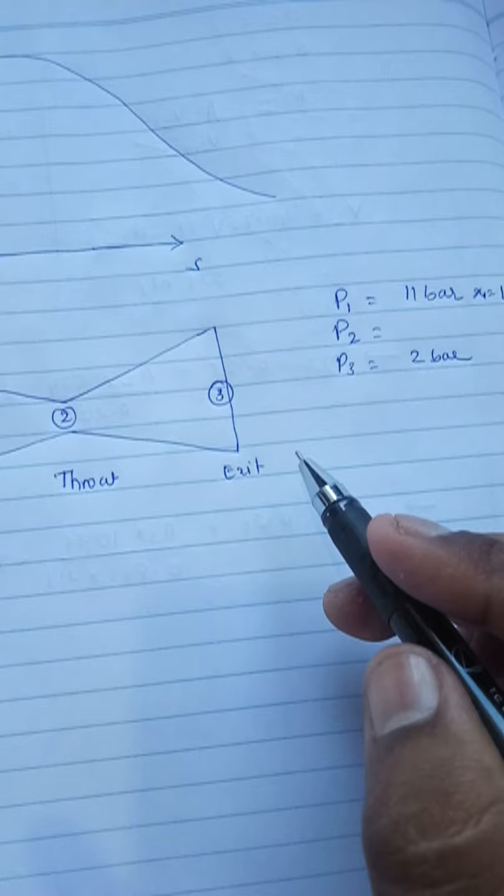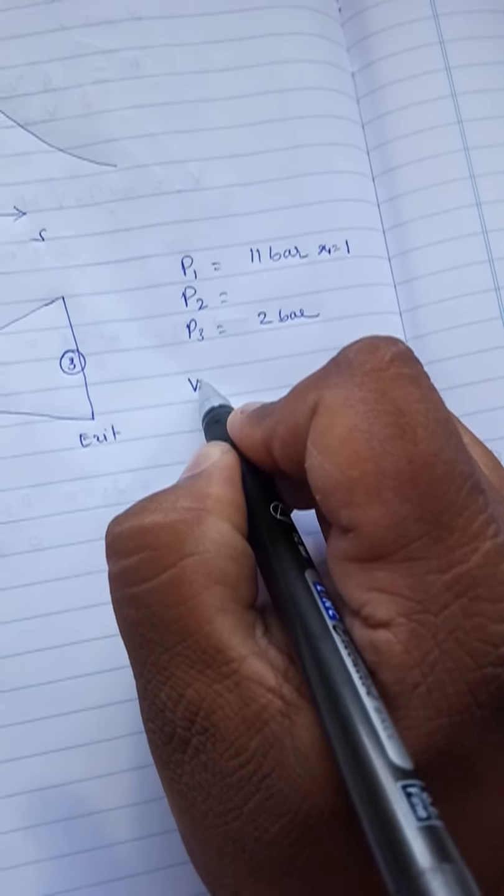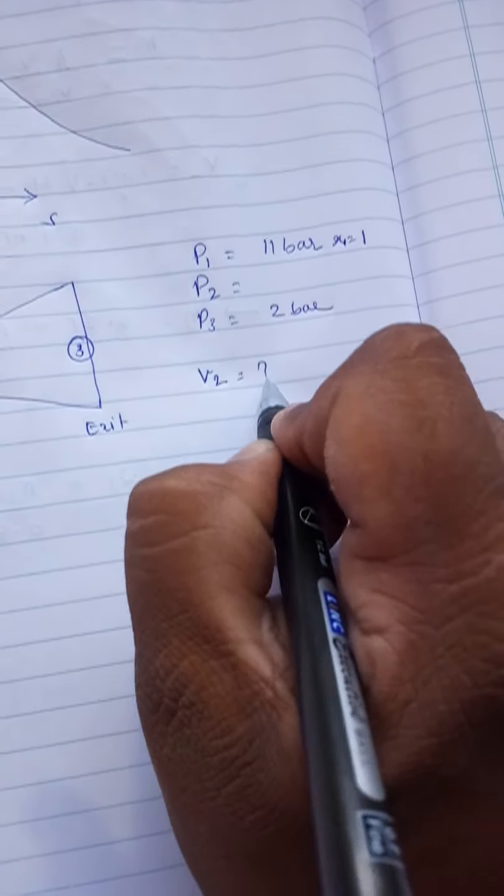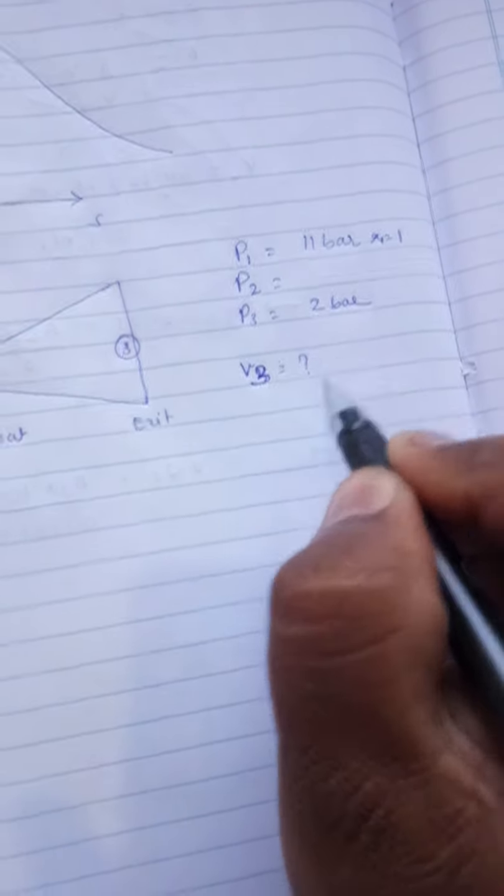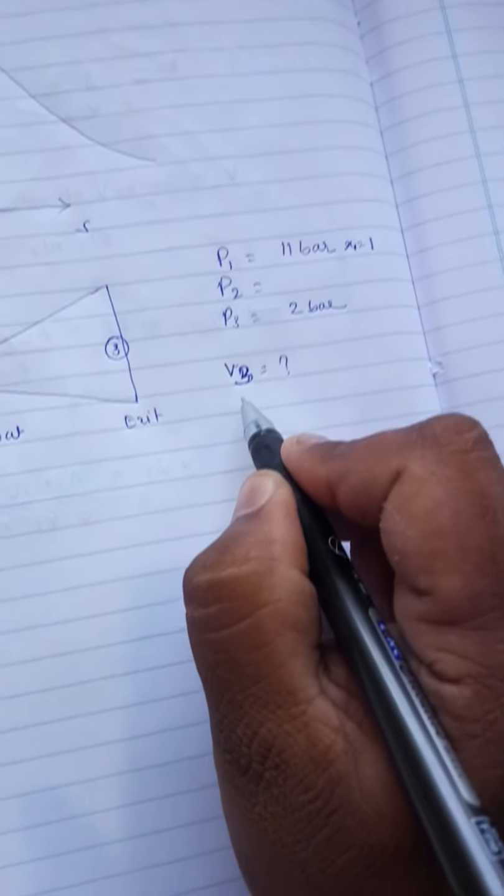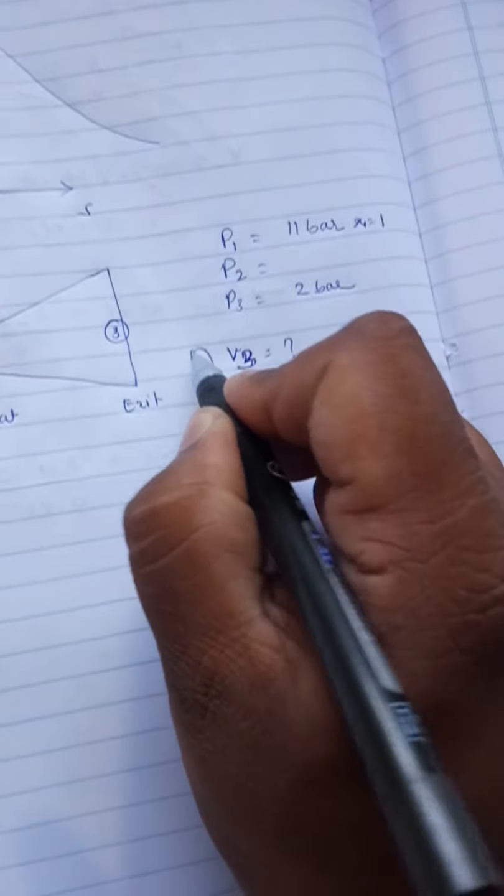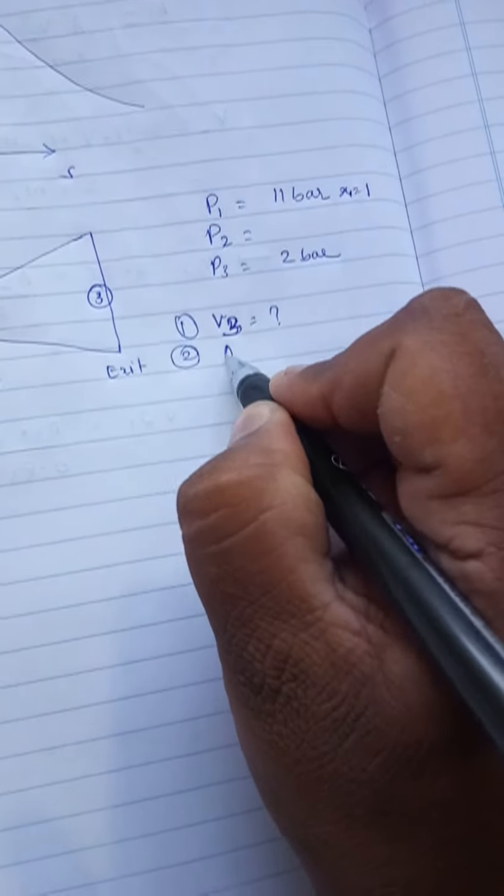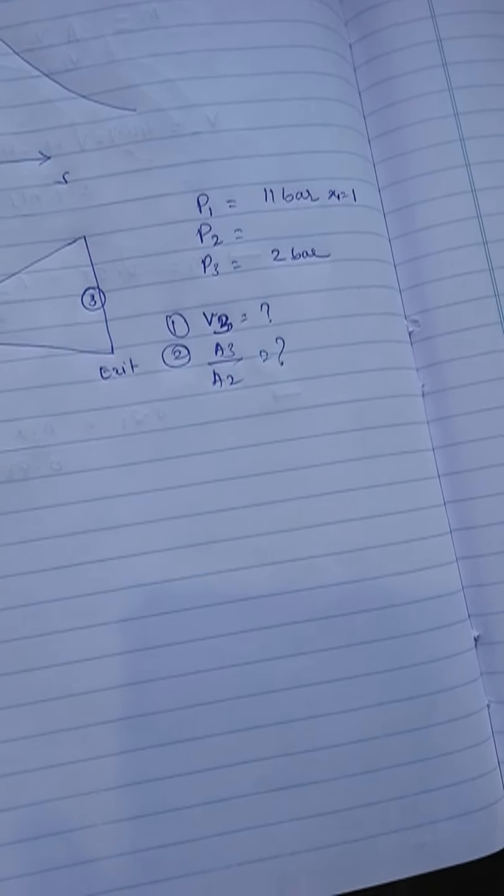Directly he has given steam leaves at pressure of 2 bar. Means leaves means he has given P3 is equal to 2 bar. So here this is inlet, throat, and exit. So at point inlet you should take P1 V1 like this. At 2 it is throat and 3rd is exit. So what he has asked you to find out - the exit velocity of the steam means he has asked us to find out V3. And the third one, ratio of cross section at exit, that is A3 by A2 he has asked.